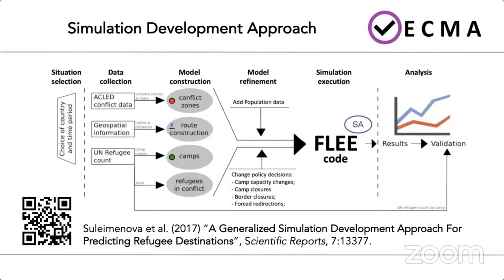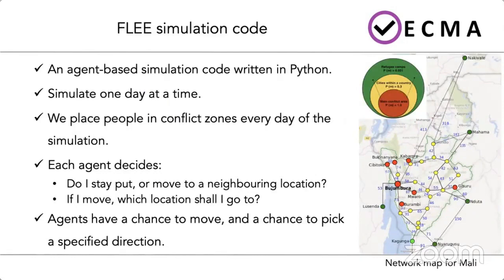FLEA is an agent-based simulation code written in Python, which simulates one day at a time. We place agents in the conflict zones, shown as red dots on the network map for Mali. Each agent decides whether they stay put or move to a neighboring location such as towns or towards camps. If they move, which location they go to depends on the chance to move and the specified direction, depending on the network map of the country.